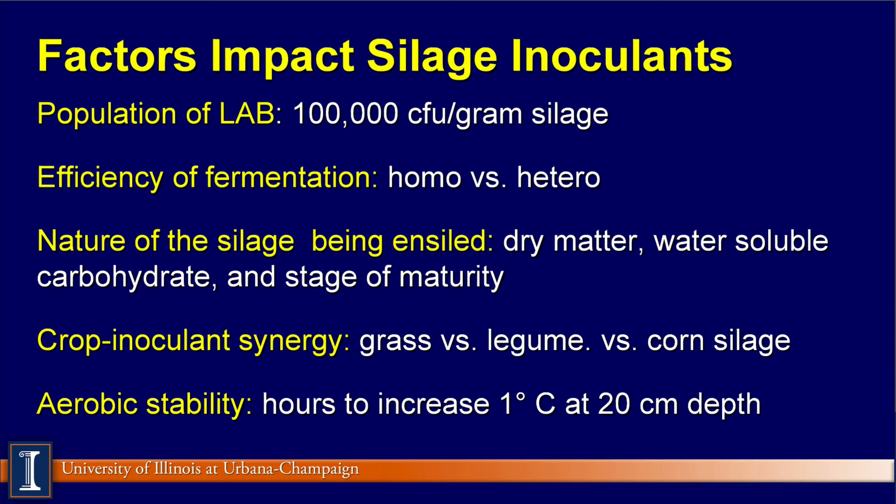What are the factors that determine if your product will work? The population of LABs is very important — research has defined this to be about 100,000 colony-forming units (CFU) per gram of wet silage. For heterofermentative products, populations may need to be three or four times higher to compete. You need to determine whether you need acetic acid. Also consider the nature of the crop being ensiled: how wet, how dry, how much water-soluble carbohydrates (sugars), and the stage of maturity.